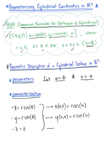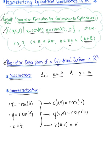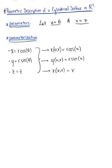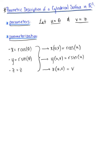Last but not least, our parametrized y in terms of u and v is going to be r sine of u, and our parametrized z in terms of u and v is going to be v. These are the three new parameterizations — our two-parameter descriptions that we're going to use to redefine the vector-valued function for our cylindrical surface.